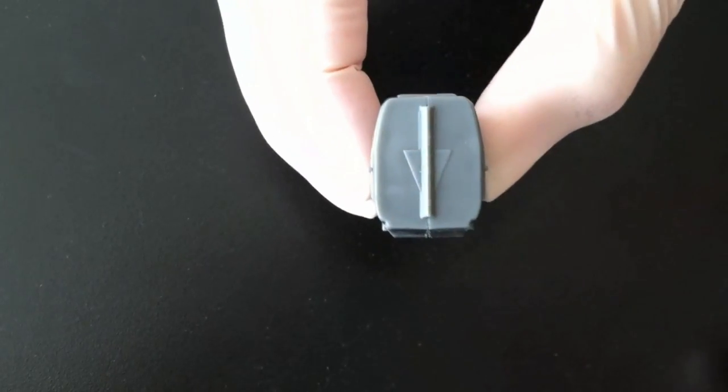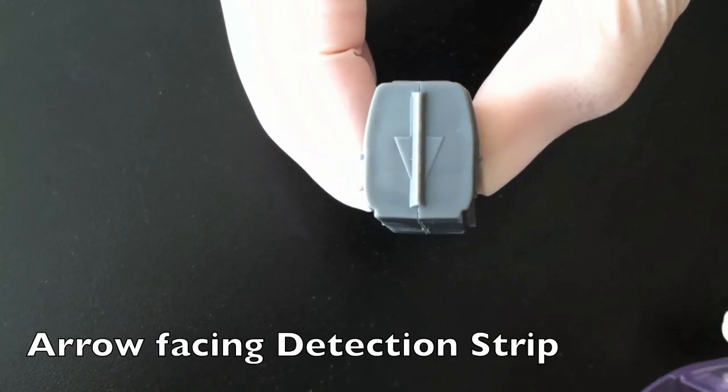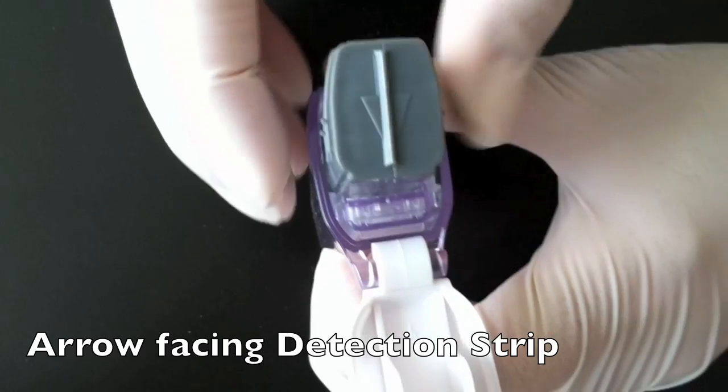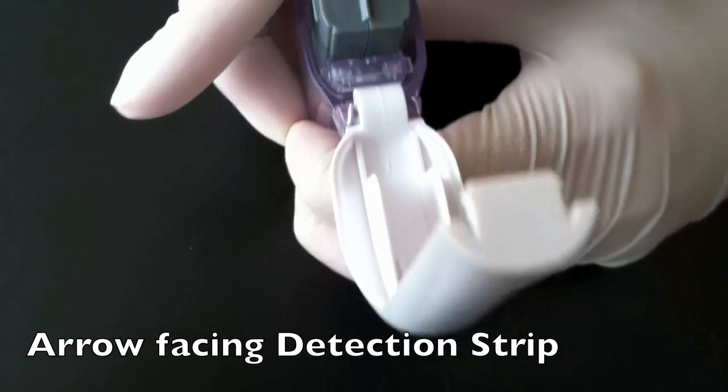Insert the closed amplicon cartridge into the detection chamber. Make sure the arrow located on the top of the amplicon cartridge faces the detection strip.